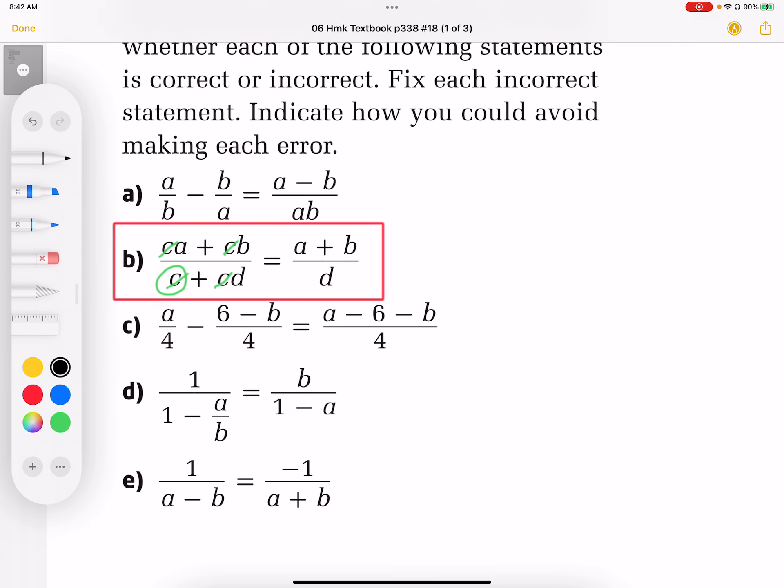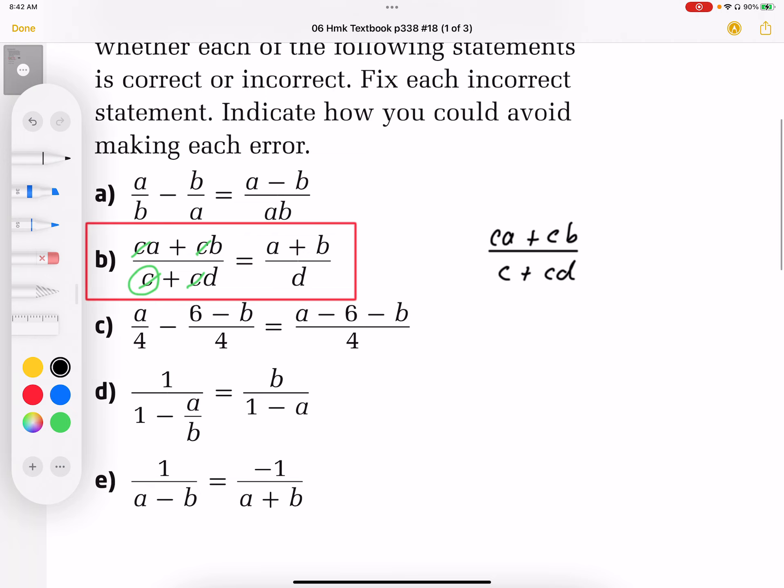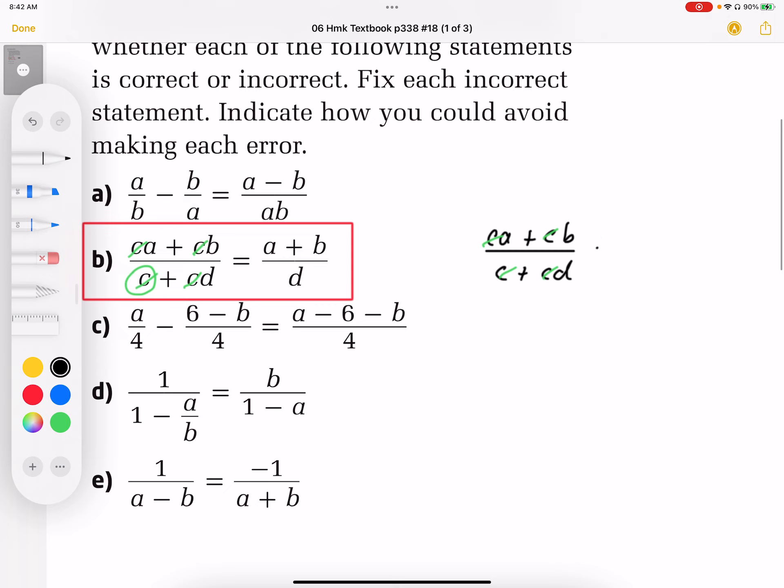So the correct answer for this then would look like this. We have ca plus cb over c plus cd. When we cancel this, if you want to do a shortcut you can do cancel, cancel, cancel, cancel, and then we end up with a plus b on the numerator and one plus d in the denominator.